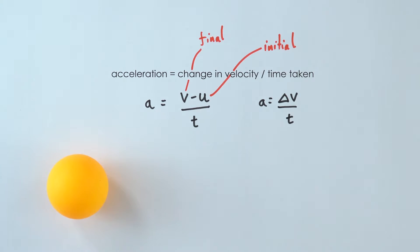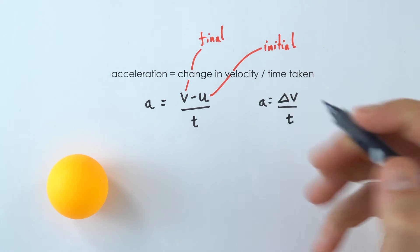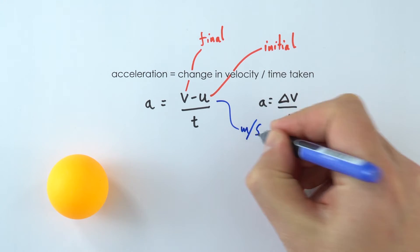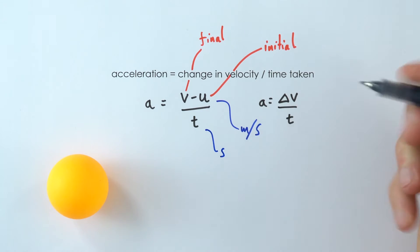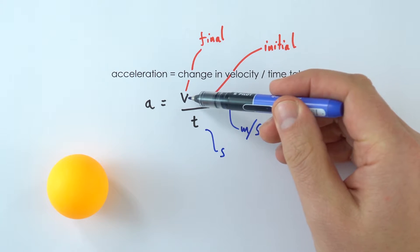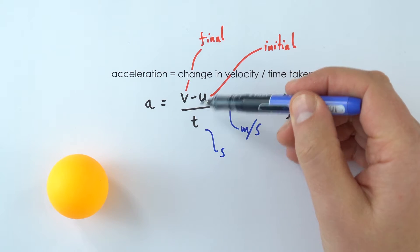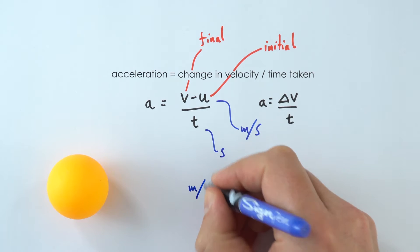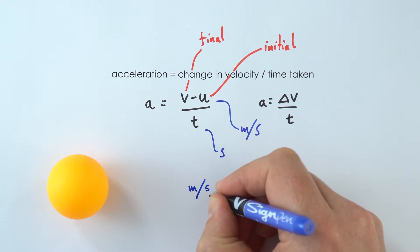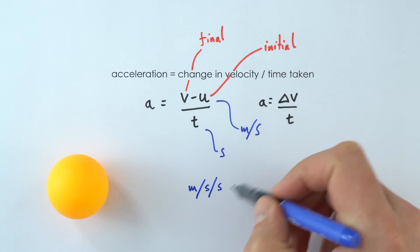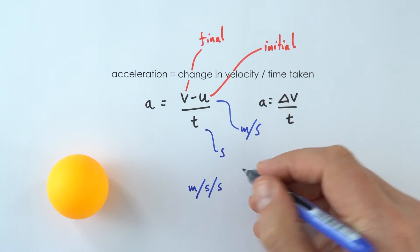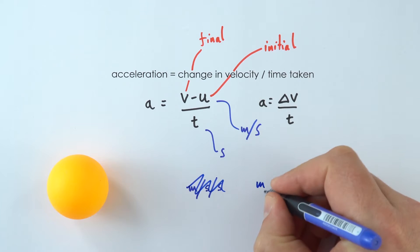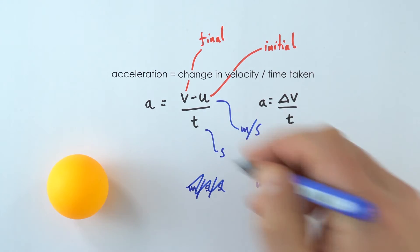We always measure velocity in meters per second and time in seconds. So when it comes to acceleration, we're looking at meters per second per second. When we write this down, we can write it as meters per second per second, but that starts to look a little messy. So a better way of writing it is as meters per second squared.